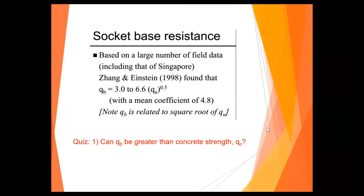Look at this equation. The end bearing is about 4.8 — take it as 5 — times the square root of the unconfined compressive strength of the rock. Do you know what the unconfined compressive strength of rock is? Third year — I can forgive you. Never mind, I'll choose another one.